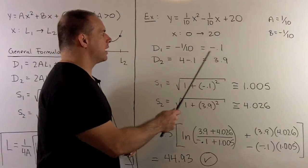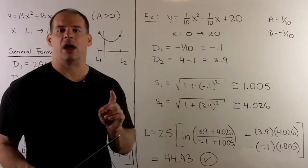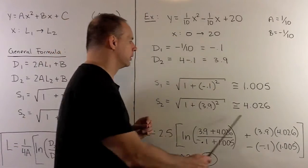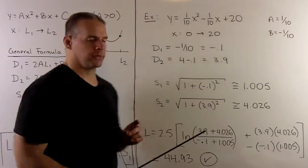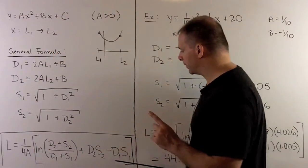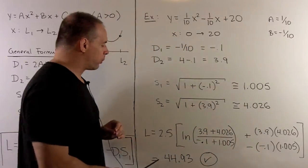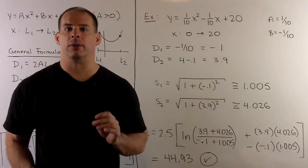d1 is going to be equal to minus 1 tenth. d2 is going to be 3.9. Then, I'll use a calculator to compute s1 and s2. We substitute into our formula. Then, when we collapse everything, we get 44.93. And that agrees with our method from before.